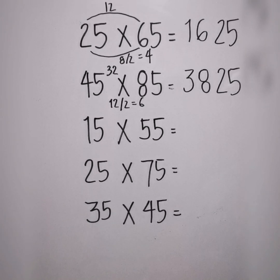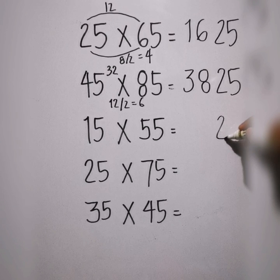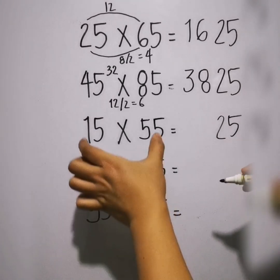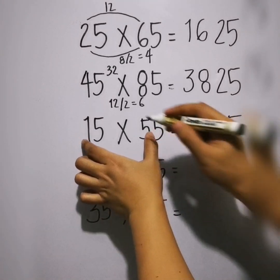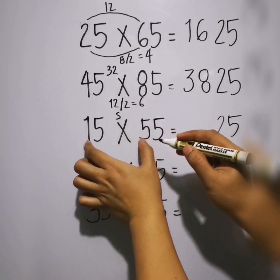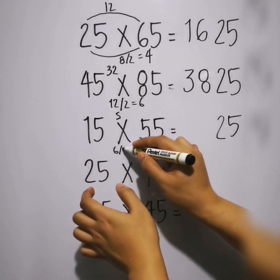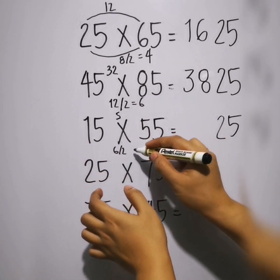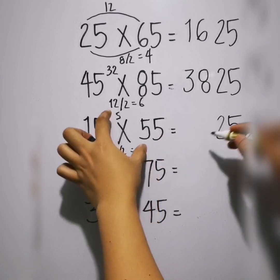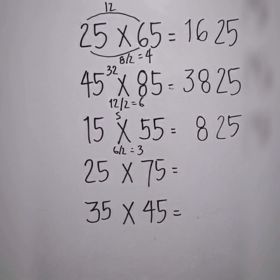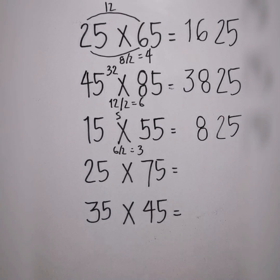Next we have 15 times 55. First step, copy 25. Next step: 1 times 5 is 5. 1 plus 5 is 6. Divide by 2, that is 3. Add them: 5 plus 3 is 8. So the answer is 825. You can check with your calculators if what we're showing here is correct.